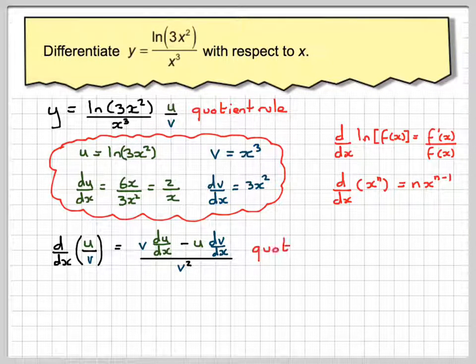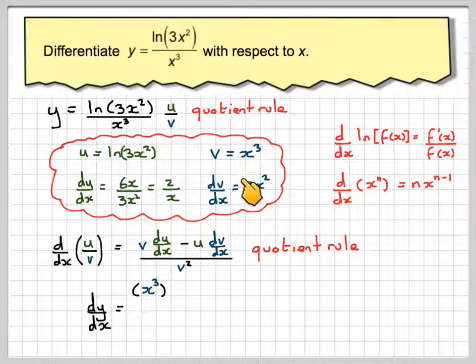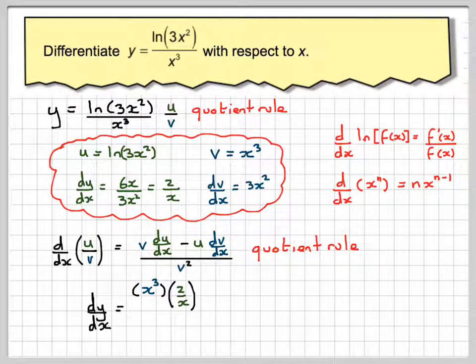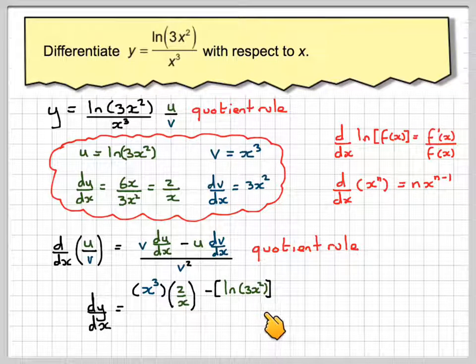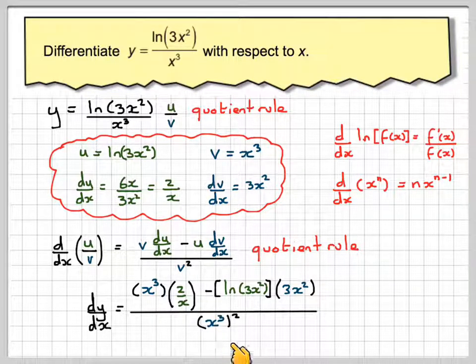So substituting things in, dy/dx will equal x cubed times du/dx, which is 2 over x, minus u, which is ln of 3x squared (notice I'm putting everything into brackets here), times dv/dx, which is 3x squared, over v, which is x cubed, and we have to square it, so it's x cubed squared.